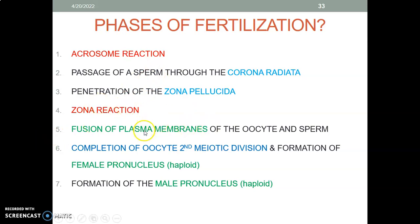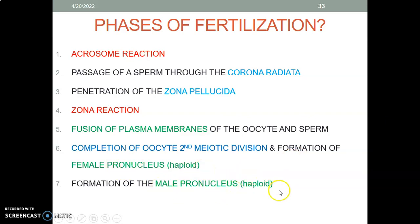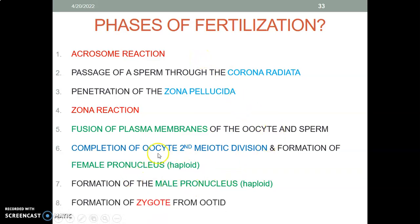The zona reaction causes a transformational change to prevent other sperms from entering, so that only one sperm fertilizes one ovum. After the zona reaction, the plasma membranes of the oocyte and the sperm fuse. Then immediately, you complete the second meiotic division — remember, it had started and was arrested at metaphase 2. After fertilization, after the male and female nuclei fuse, you complete it. The female pro-nucleus will form and the male pro-nucleus will form. And lastly, after the male and female pro-nuclei fuse, you form a zygote.